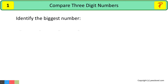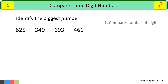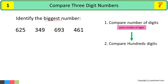Let us first find the greatest or biggest number among these four numbers. As per the rule, first we need to see if all these numbers have equal digits. All these numbers are three-digit numbers, so we will move to the next stage. We will compare digits at the hundreds place.